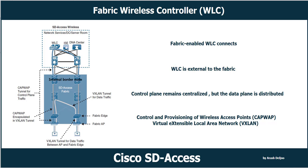When a client authenticates — wired or wireless — with the help of Cisco ISE, ISE assigns an SGT tag (Scalable Group Tag) and VRF-based policies. SGT and VRF-based policies for wireless users on the fabric and SSID are applied to the fabric edge in the same way as for wired users.